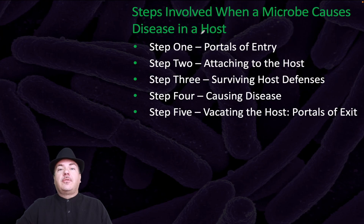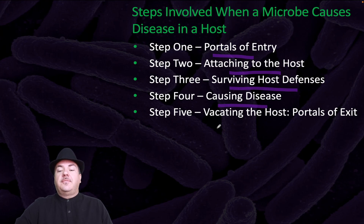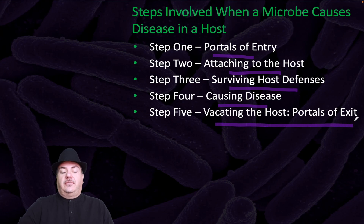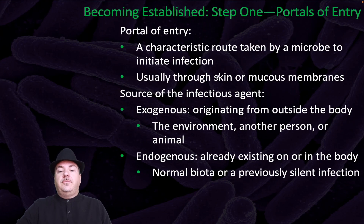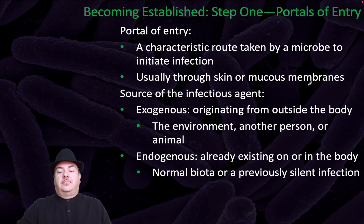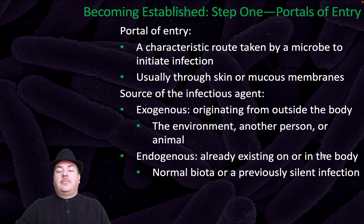The steps involved when a microbe causes disease in a host include: portals of entry, attaching to the host, surviving host defenses, causing disease, and then vacating the host through portals of exit. Starting with step one — portals of entry — a characteristic route taken by a microbe to initiate infection, usually through skin or mucous membranes. The source of the infectious agent could be exogenous, originating from outside the body such as the environment, another person, or animal; or endogenous, already existing on or in the body, such as normal biota or a previously silent infection.